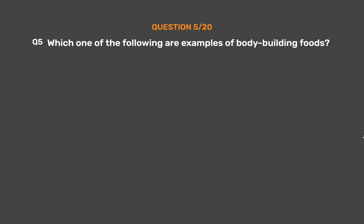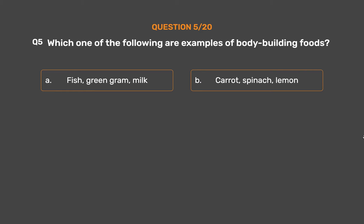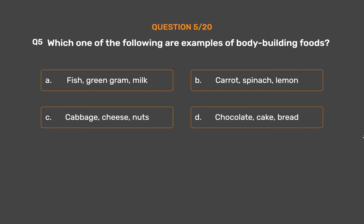Question number 5. Which one of the following are examples of bodybuilding foods? Option A - Fish, green gram, milk. Option B - Carrot, spinach, lemon. Option C - Cabbage, cheese, nuts. Option D - Chocolate, cake, bread.